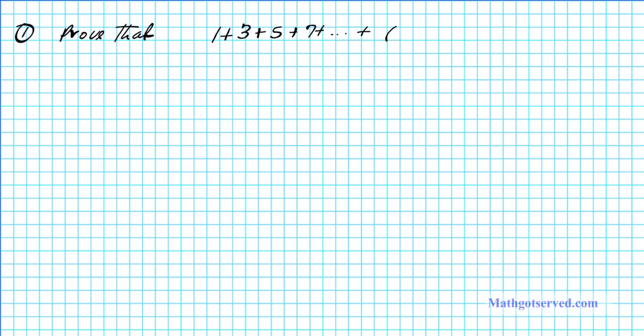Let's take a look at an example. The problem is: prove that 1 plus 3 plus 5 plus 7 plus ... plus (2n minus 1) — which represents odd numbers — is equal to n squared, for all n in the set of natural numbers. That's what we're going to show.